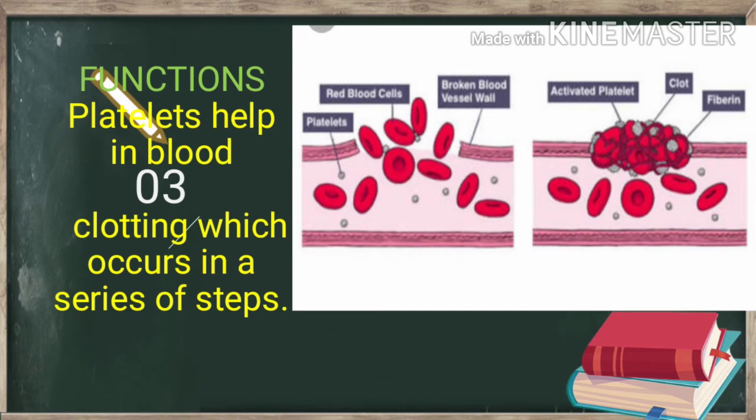When a blood vessel is cut, blood escapes from it, but soon a clot is formed in the wound and the flow of blood is stopped. If it were not so, the injured person would bleed to death. This clotting process, or coagulation, occurs in a series of steps.